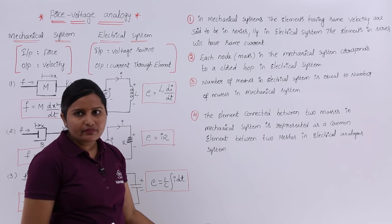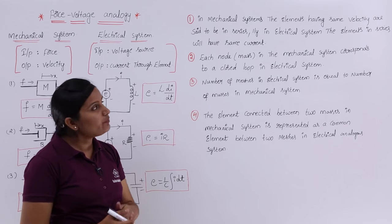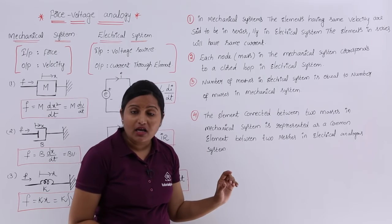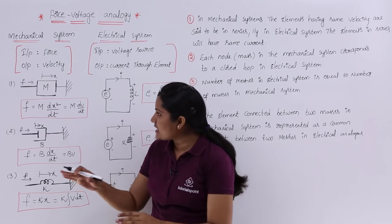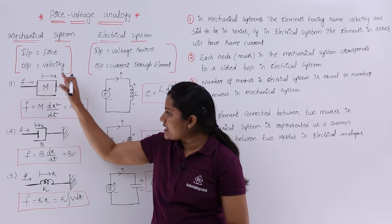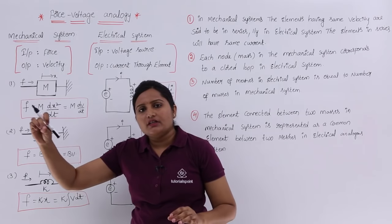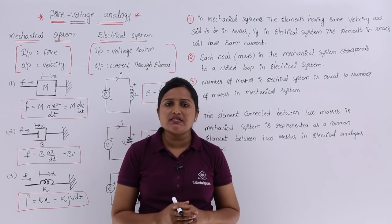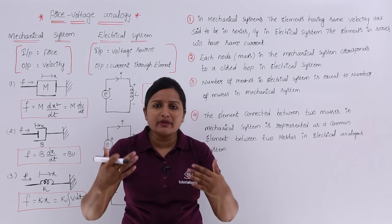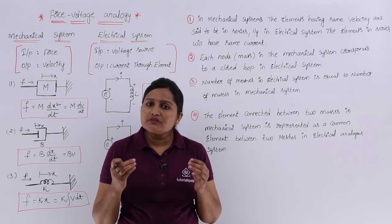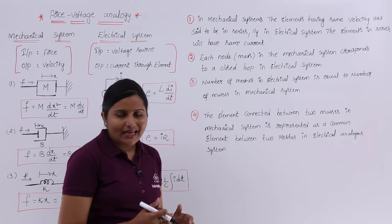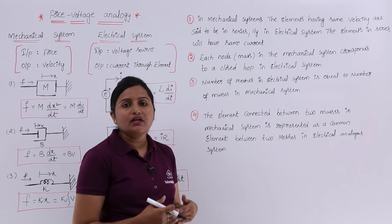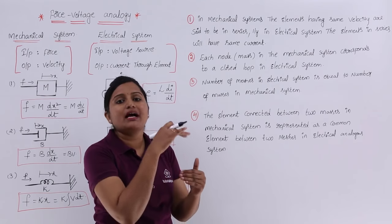Now, coming to very important points related to this conversion — there are four important points to follow. First, in a mechanical system, elements having the same velocity are said to be in series. Whatever elements are in series in the mechanical translational system — for example, mass followed by dashpot followed by spring — those elements are said to have the same voltage in the electrical system. Similarly, in the electrical system, elements in series have the same current.